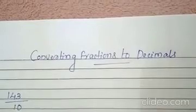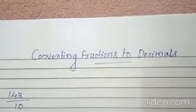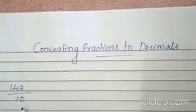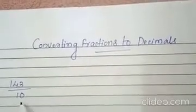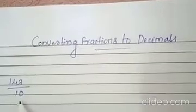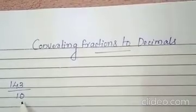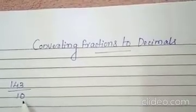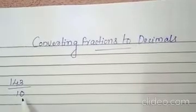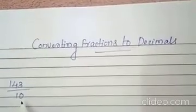It has a numerator and it has a denominator. In this fraction, we have to convert into decimal. First, look at the denominator. Count the number of zeros in the denominator — this gives you the number of decimal places.